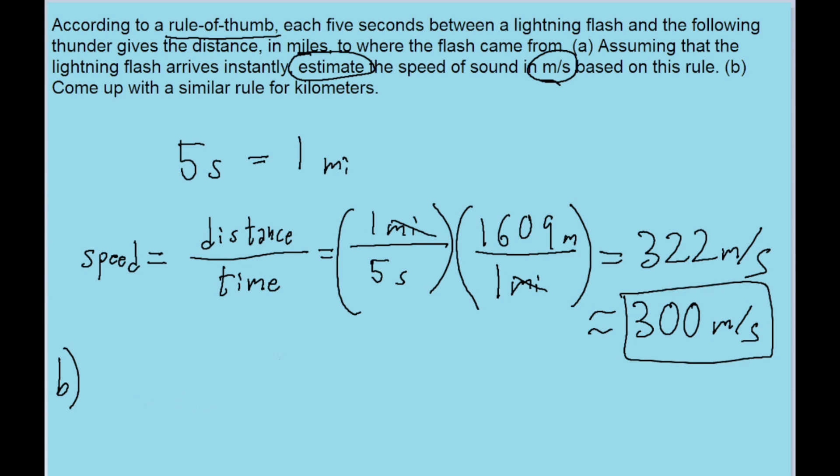One way to do this is take the value we found, 322 meters per second, and figure out how long it would take for the thunder to travel one kilometer. Keep in mind we're only looking for an estimate—it doesn't have to be perfect. Since one kilometer equals a thousand meters,